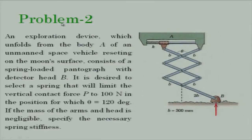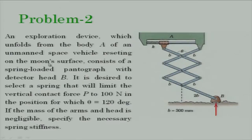Next, problem 2. An exploration device unfolds from body A of a spacecraft. This mechanism explores the surface of the Moon. It consists of a spring-loaded pantograph with detector head B. It is desired to select a spring that will limit the vertical contact force P to 100 Newtons in the position for which theta equals 120 degrees.